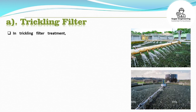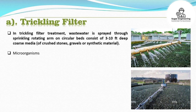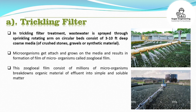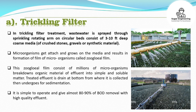In trickling filter treatment, wastewater is sprayed through a sprinkling rotating arm on circular beds consisting of 3 to 10 feet deep coarse media of crushed stones, gravels, or synthetic material. Microorganisms get attached and grow on the media, resulting in the formation of a film of microorganisms called zoogloeal film. This zoogloeal film consists of millions of microorganisms that break down organic material of effluent into simple and soluble matter. Treated effluent drains at the bottom where it is collected and then undergoes sedimentation. It is simple to operate and gives almost 80 to 90% BOD removal with high-quality effluent.